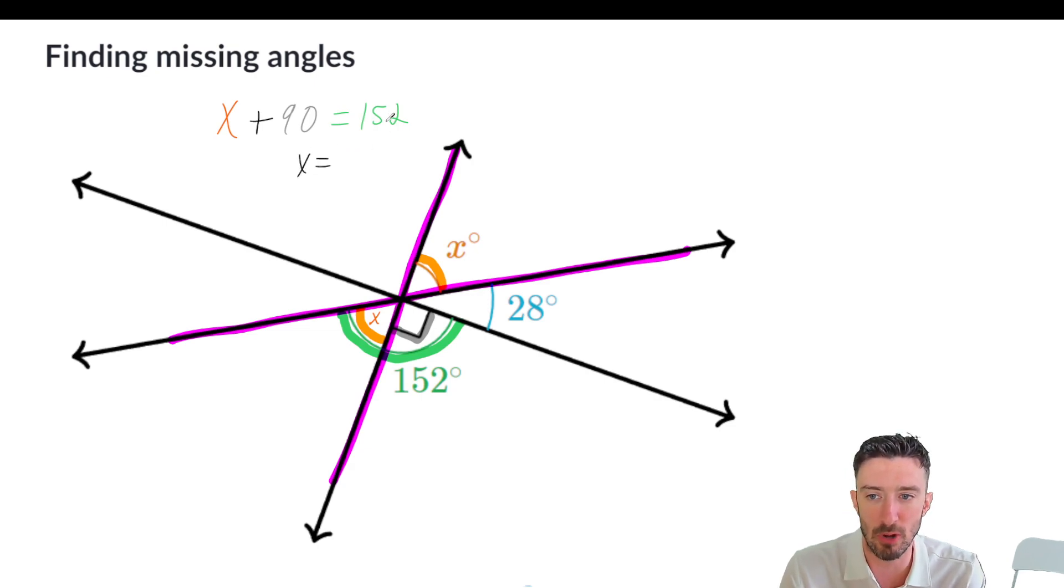So that means all I got to do is subtract and 150 minus 90 is 60. So our answer here is 62.